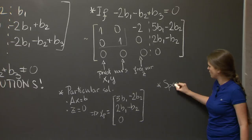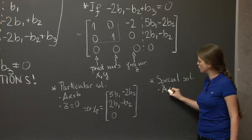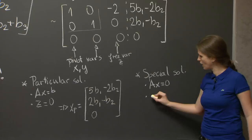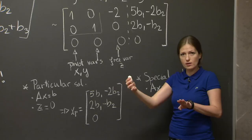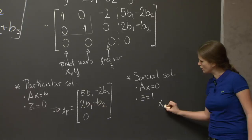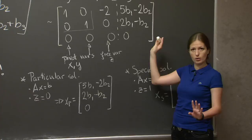The next kind is the special solution. So remember, those solve Ax equals 0. There's as many of them as there are free variables. In our case, there's only one. And we get it by setting all free variables equal to 0, except 1 equal to 1, and do it for every free variable. So in our case, there's only one free variable, and we set z equal to 1.